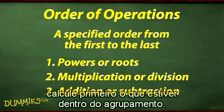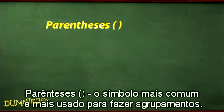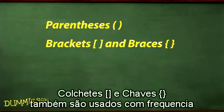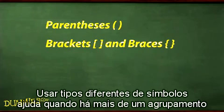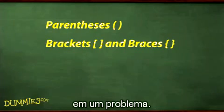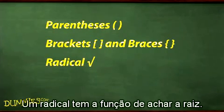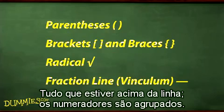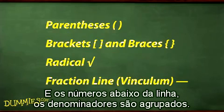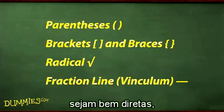If the problem contains grouped items, do what's inside a grouping symbol first, then follow the order of operations. The grouping symbols are parentheses, the most commonly used symbols for grouping. Brackets and braces are also used frequently and have the same effect as parentheses. Using different types of symbols helps when there's more than one grouping in a problem — it's easier to tell where a group starts and ends. A radical is used for finding roots, and a fraction line also acts as a grouping symbol: everything above the line in the numerator is grouped together, and everything below the line in the denominator is also grouped together.